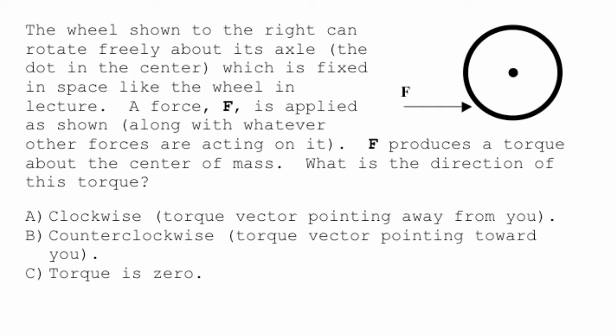F produces a torque around the center of mass. Well, this thing is a uniform wheel. There's just as much mass above as below, to the right as to the left. So the center of mass of this wheel is right on the axis, right in the middle. It's right on the axle of the axis of rotation.